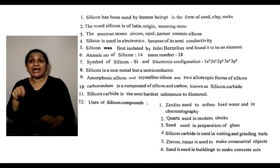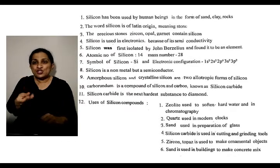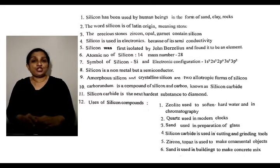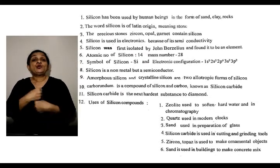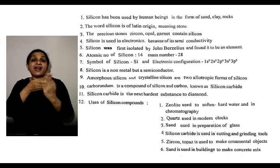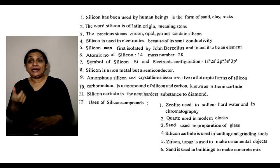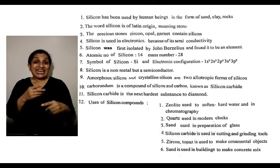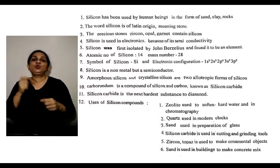Among the uses of silicon compounds: zeolite is used to make hard water soft. Quartz is used in watches and clocks. Sand is used to make glass.